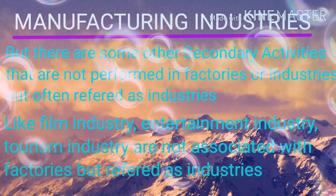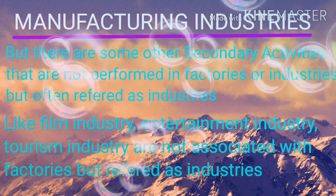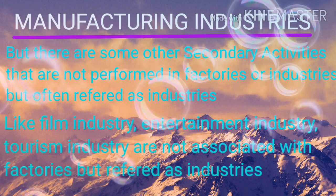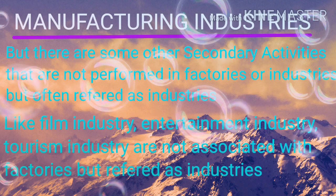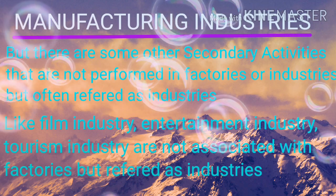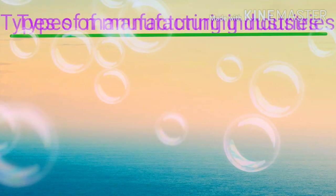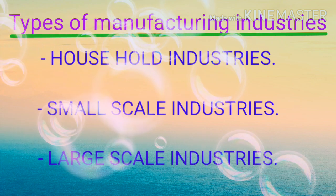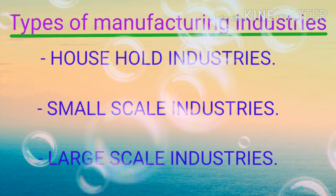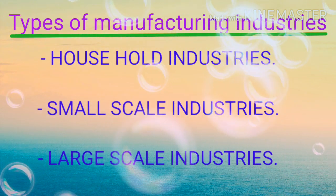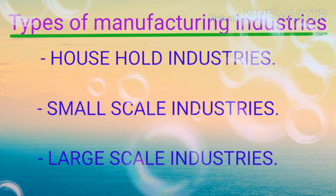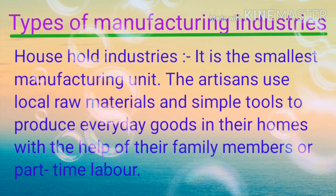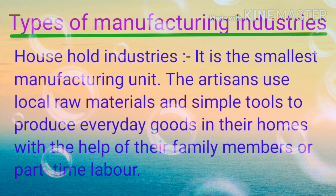For example, the film industry, entertainment industry, and tourism industry are not associated with factories but are referred to as industries. The types of manufacturing industries are: household or cottage-based industries, small scale industries, and large scale industries.